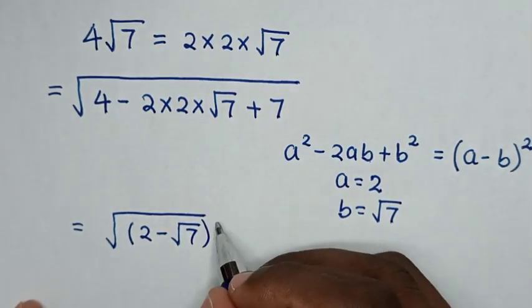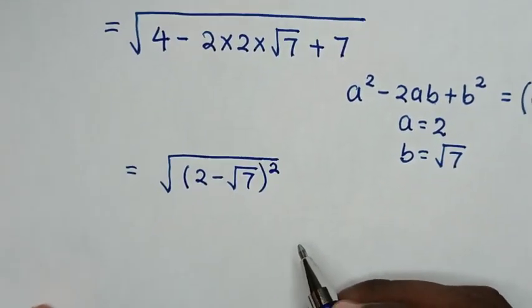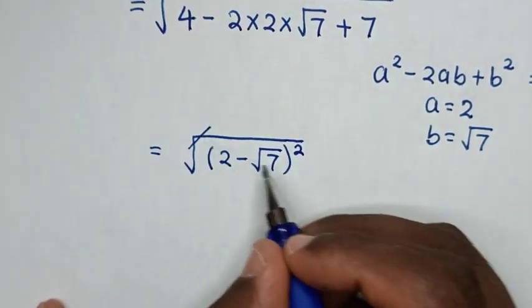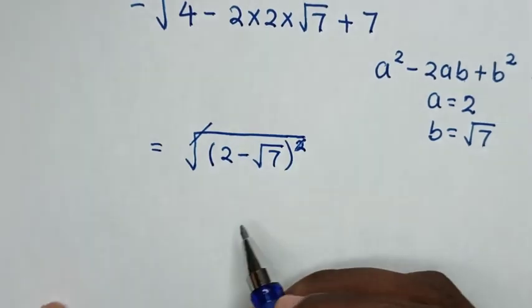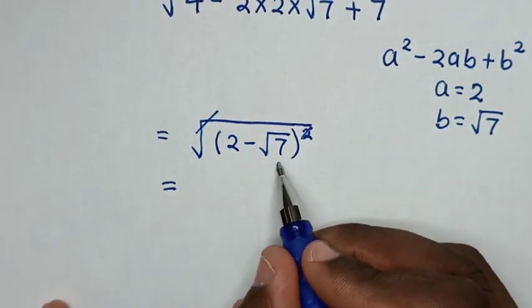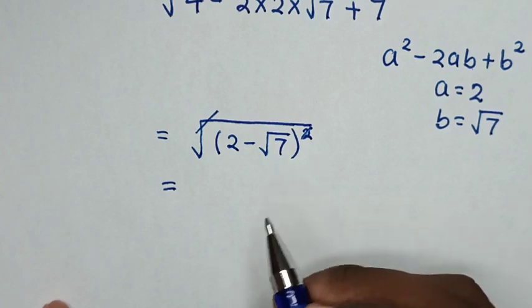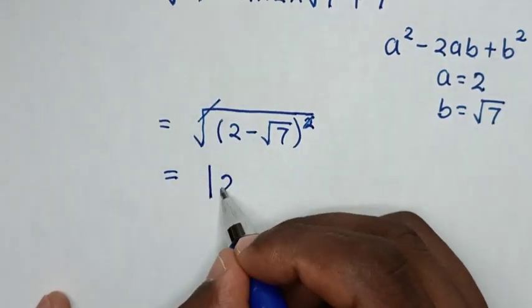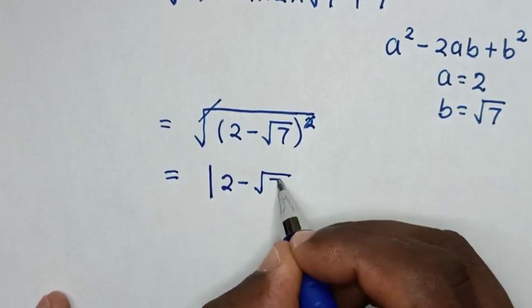Then, in the next step, this square root will cancel with square, and it will be equal to, from here, this 2 minus square root of 7 is negative, so it should be absolute value: absolute of 2 minus square root of 7.